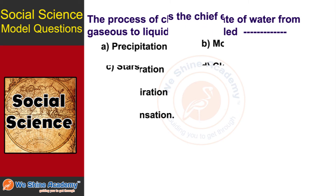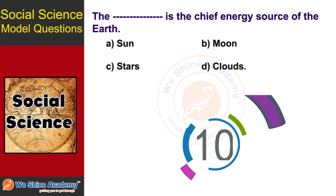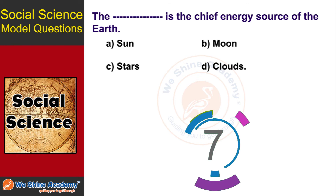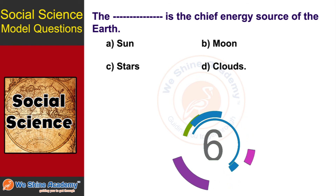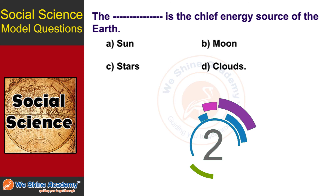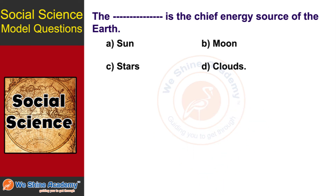The next question is: dash is the chief energy source of the earth. In 10 seconds, find the answer. The answer is Option A: Sun.